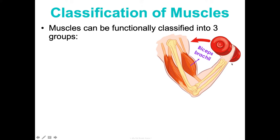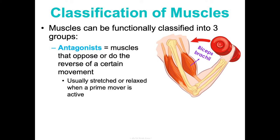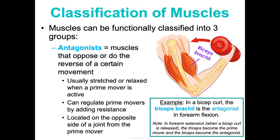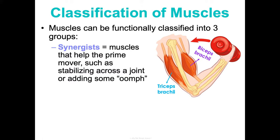The antagonist is the functional classification that opposes or does the reverse of a certain movement. It's usually stretched or relaxed when the prime mover is active, and these can regulate prime movers by adding resistance. They're typically located on the opposite side of a joint from the prime mover. In a bicep curl, the triceps brachii are the antagonist in forearm flexion. These can flip — in forearm extension, the triceps are the prime mover and the biceps become the antagonist.